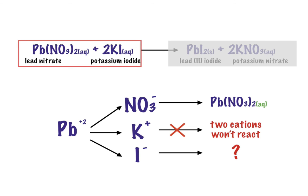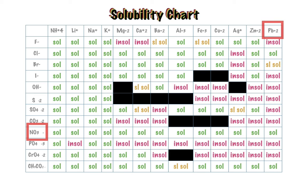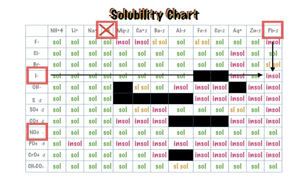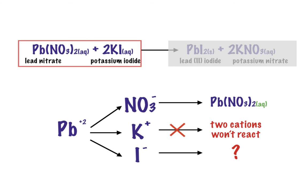So what about iodine? Let's go to our chart. If we look at potassium, it's in the same row, so you know there's going to be no reaction with potassium and lead. But now look at iodine. Let's find where iodine and lead will meet on the chart. And there they meet — and you'll notice it's insoluble. So when you have these two elements combined, you end up with an insoluble result, which means they do not dissolve in the solution, which means they form a solid.